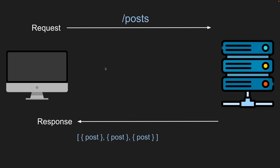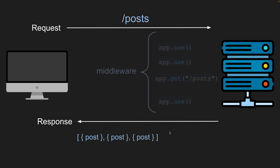First I want to go over the request and response cycle with Node applications. You have a client, which is typically a browser, and it'll send a request to the server — to slash posts for example — and the server will do some database lookups or some sort of processing and then return a response, which could be an array of posts.